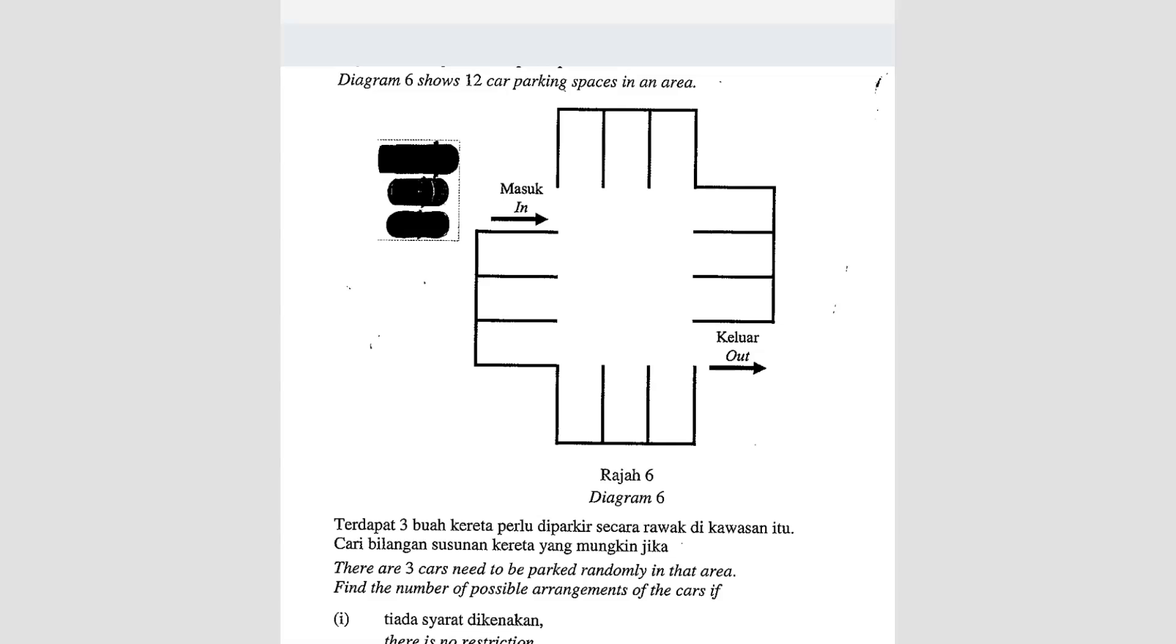If you arrange, let's say car A, car B, car C. If I arrange A, B, C or A, C, B, they are considered 2 different ways, 2 different arrangements. So that means the arrangement will matter. So the question says if there is no restriction, how many parking lots? Total got 12.